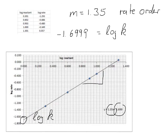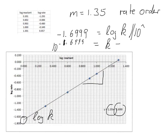And if we want to calculate what k actually is, all we need to do is take both sides 10 to the power of. So we have 10 to the power of minus 1.6999 equals 10 to the power of log k. So 10 and log cancels out, so we have k. And if we calculate that we get k equals 0.02.